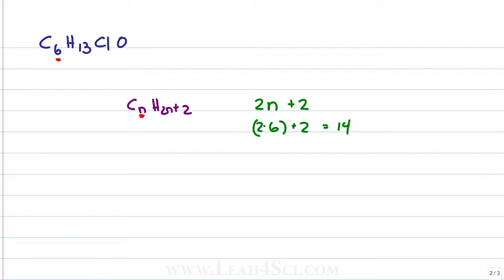Don't forget that halogens because of how they bind to carbon count just like hydrogen. So if we add up 13 hydrogen plus 1 hydrogen like halogen, we actually have 14. 14 minus 14 is 0, that means we have no pi bonds and no rings on this molecule.